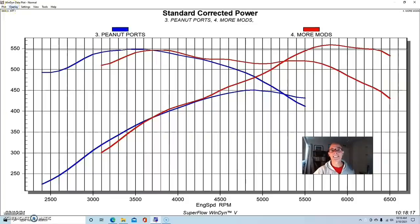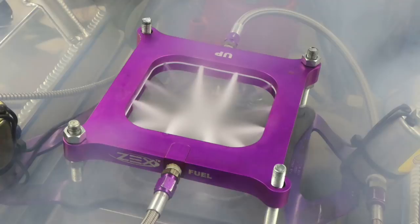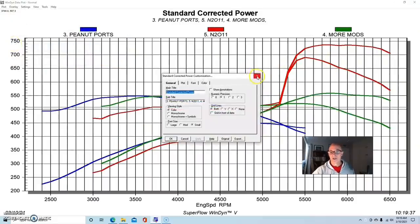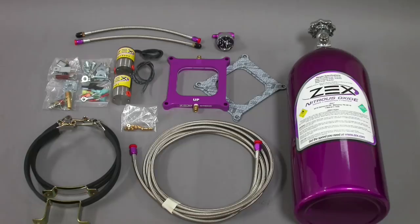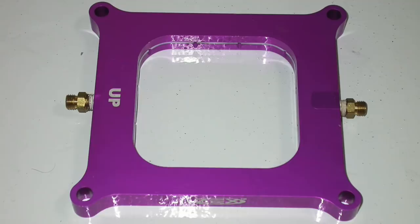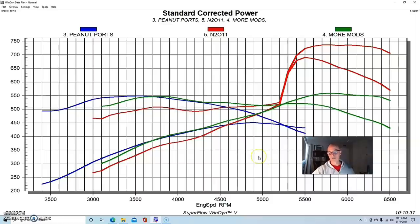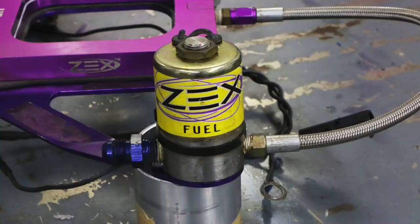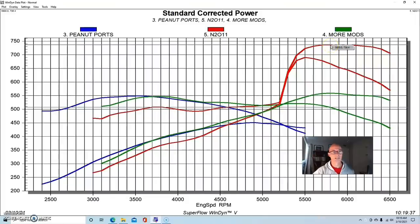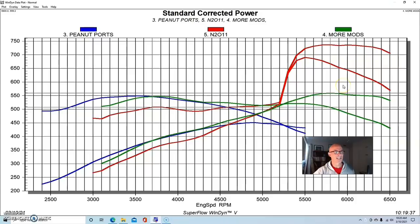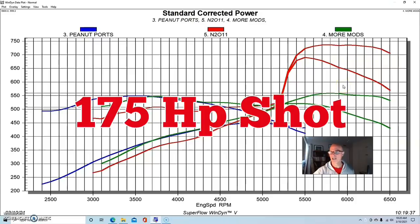Here's what happened when we put a Zex plate system on here. We ran a Zex perimeter plate nitrous system and pushed the power up to 736 horsepower. This was like a 150 shot or so.